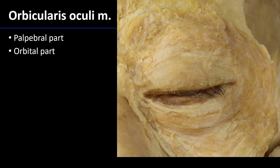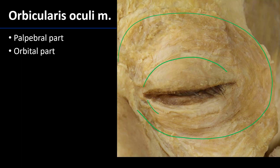The orbit is covered anteriorly by the orbicularis oculi muscle. The orbicularis oculi muscle has three parts, two of which are visible here. There is the orbital part, which completely covers the orbit and then some. Then there's the palpebral part, which is specifically on the eyelids or the palpebrae — so the orbital part surrounding the palpebral part.